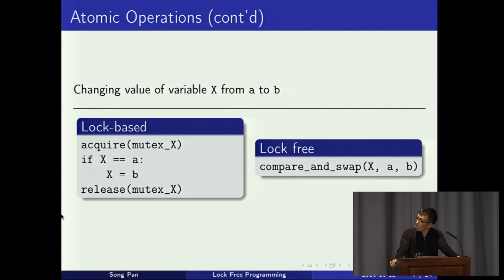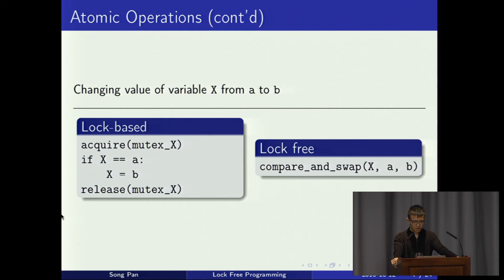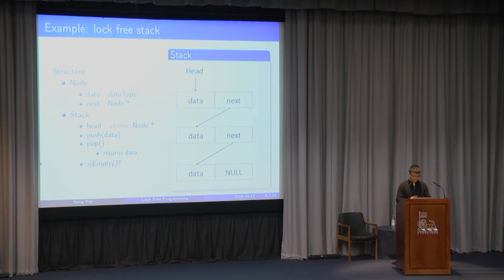Here's an example: suppose you want to change the value of variable x from A to B. Using locks, you'd acquire the mutex protecting x, check if it equals A, change it to B (or do nothing if not), then release the mutex. Using atomic operations, you just do compare-and-swap(x, A, B) — three operands, all in one single instruction. In most architectures, compare-and-swap returns the original value stored in x, but here we assume it returns a success or failure code for easier use.